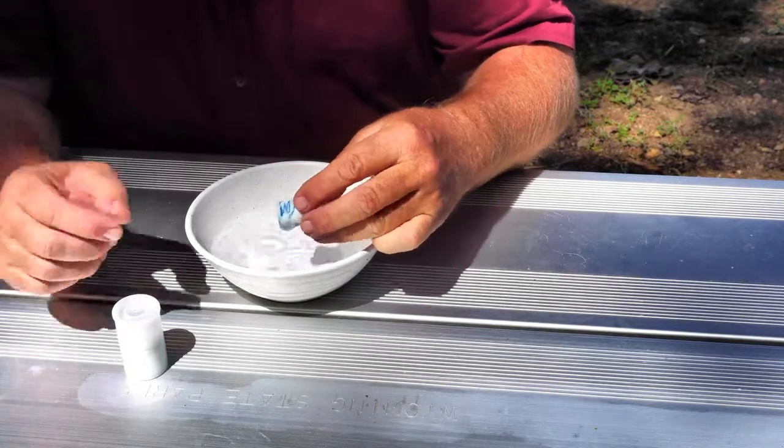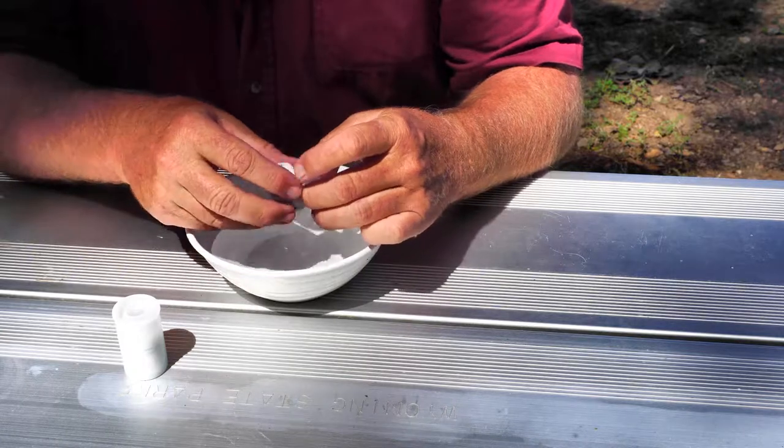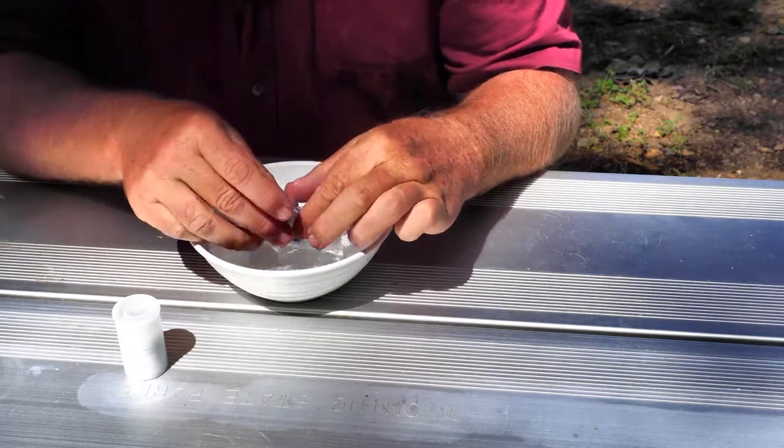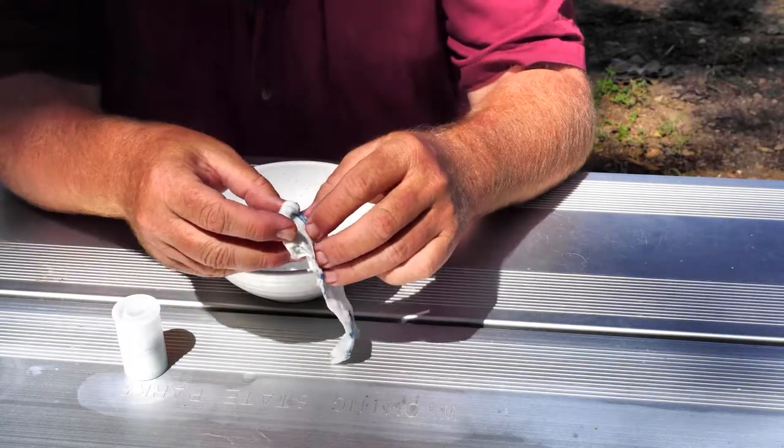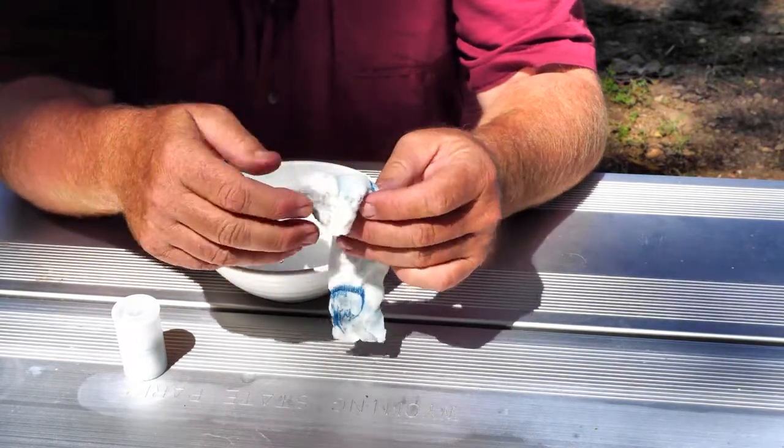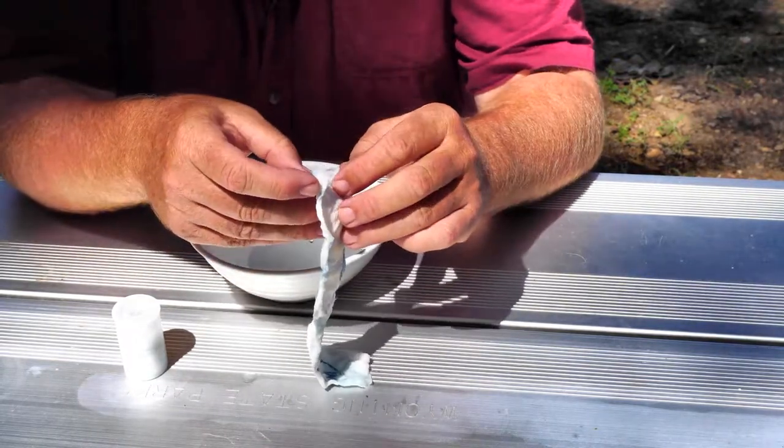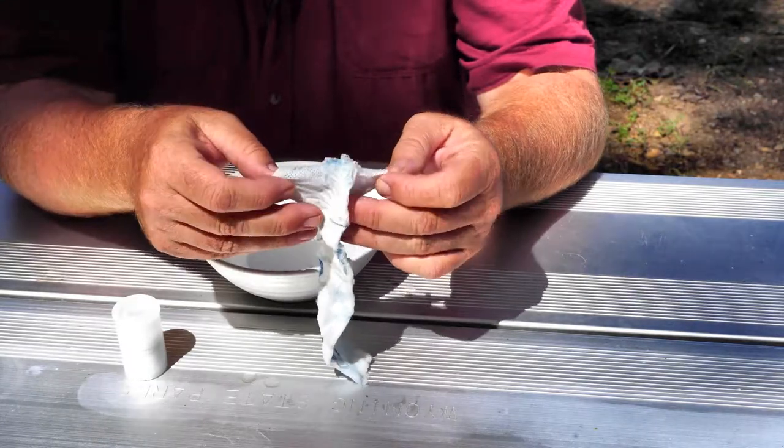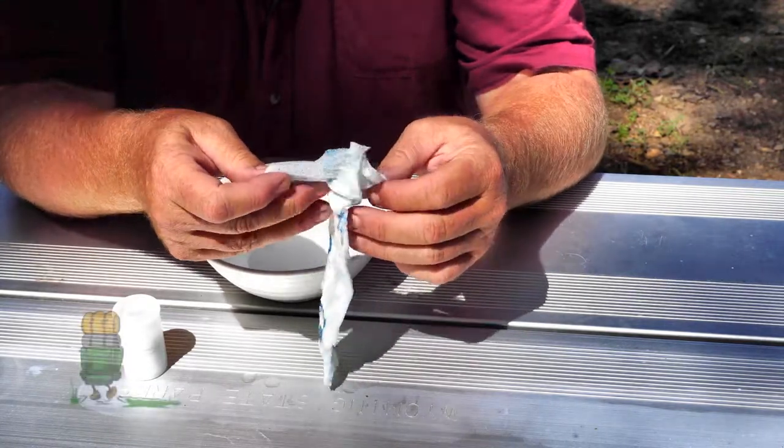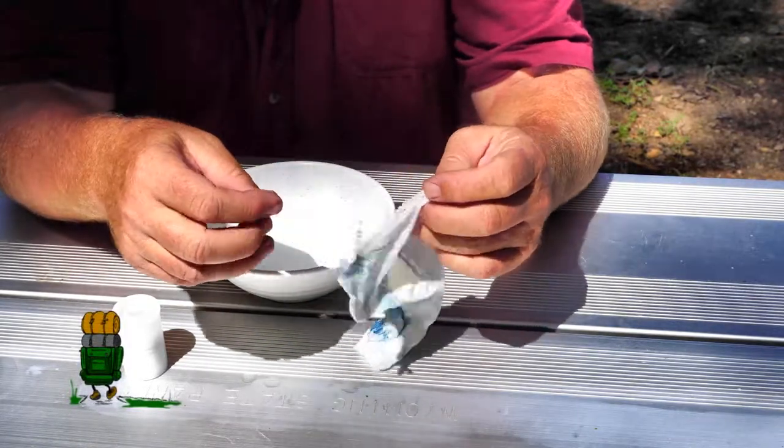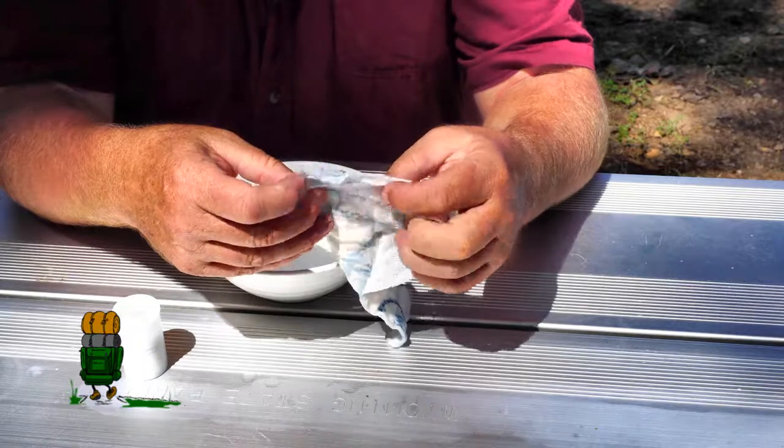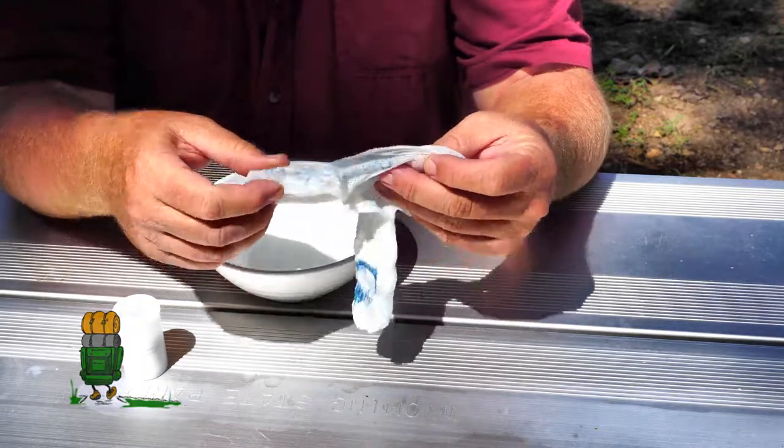It unrolls and unfolds into this particular manufacturer. It is like a perforated towel, but it's not really a paper and it's not really a cloth. It's like a good quality heavy duty paper towel.